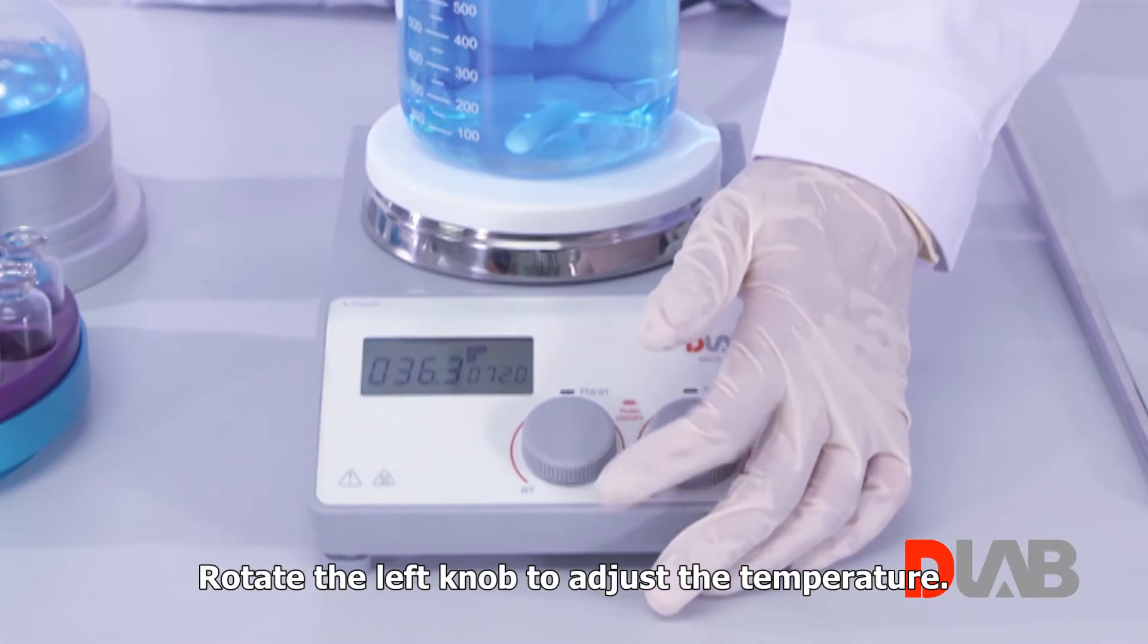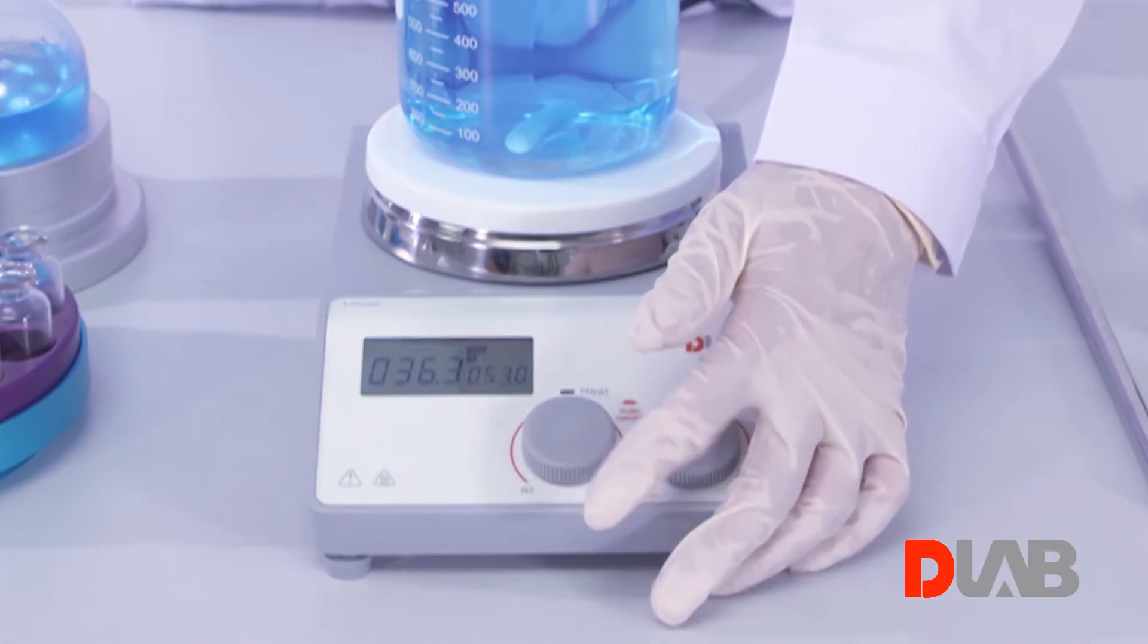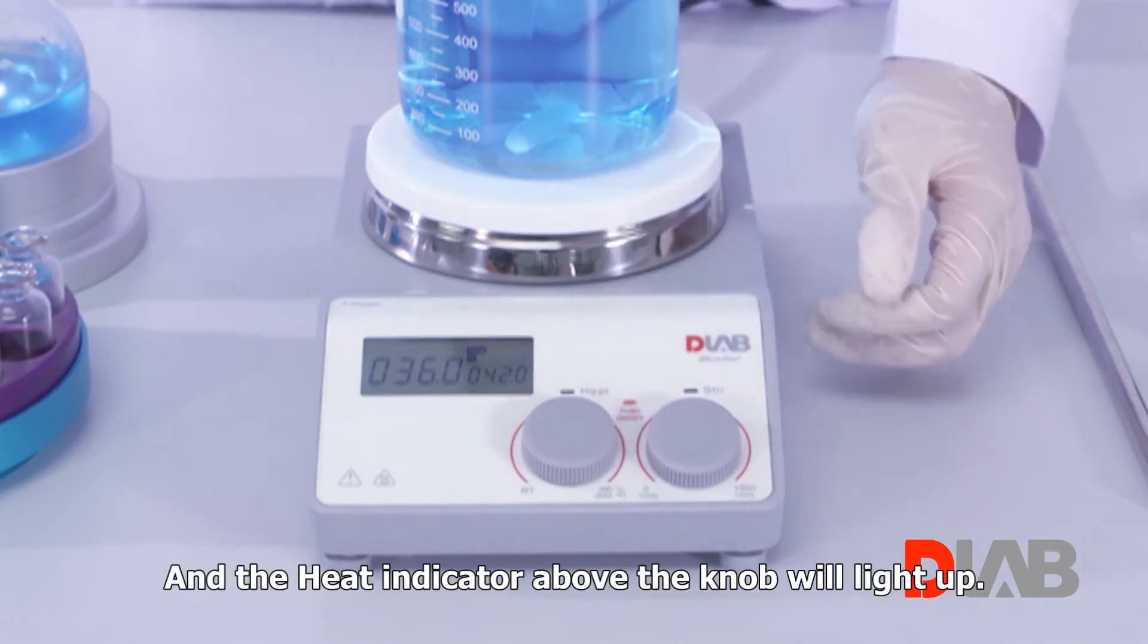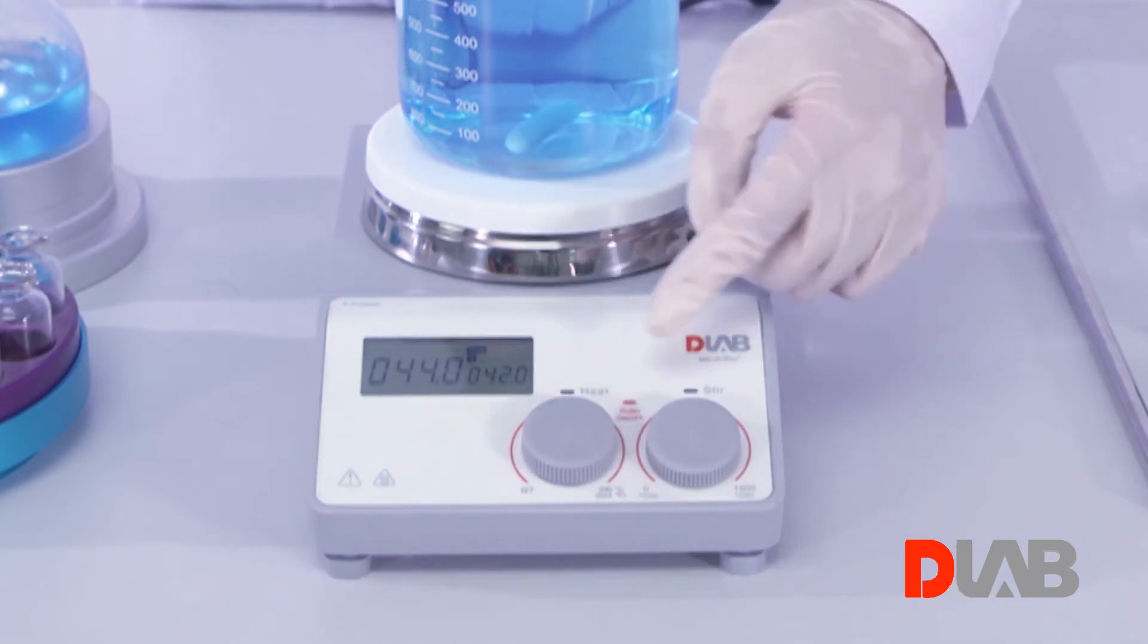Rotate the left knob to adjust the temperature. Click the knob to start heating. And the heat indicator above the knob will light up.